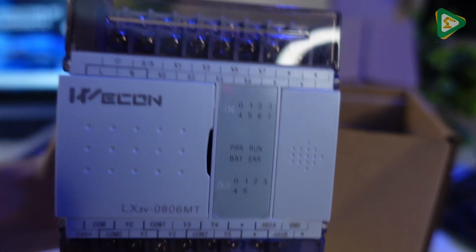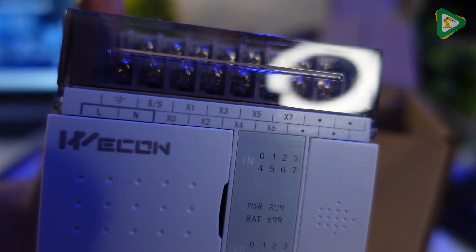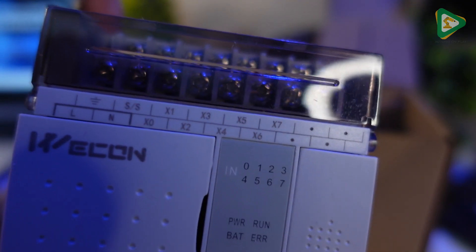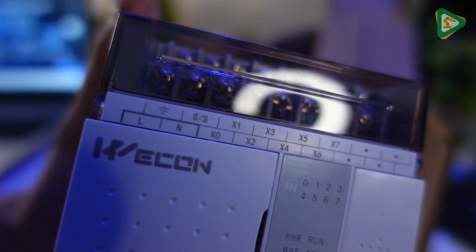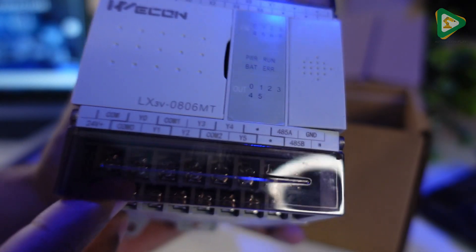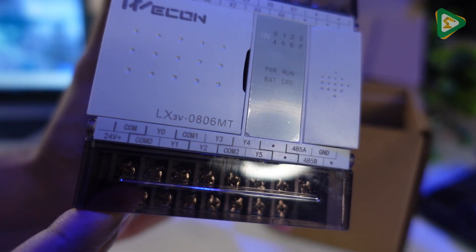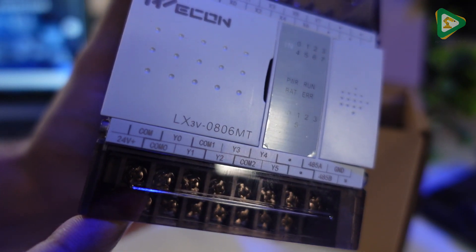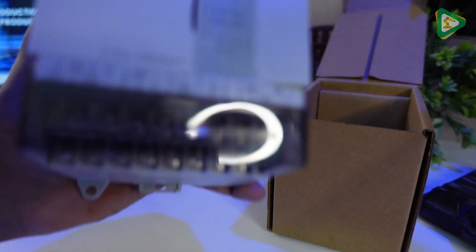Here you can see the inputs on top of the PLC in X1, X2, X3 form. This takes normal line and neutral as input, and the outputs are Y0, Y1, Y2 with common terminals, and 24 volt out as well over here.